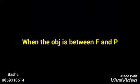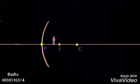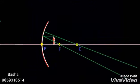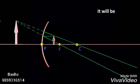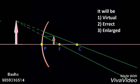Case 7: When the object is between F and P — that is, between the focus and the mirror — observe the rays. The two rays appear to be coming from a point behind the mirror, where the image is said to be formed. The image will be a virtual, erect, and enlarged image.